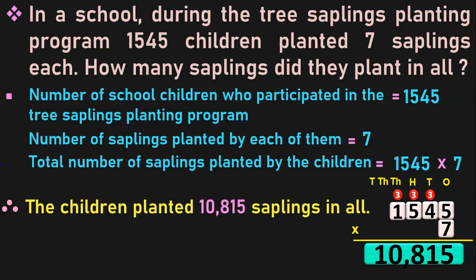Write down the answer: therefore the children planted 10,815 saplings in all. Let us do the next sum now.